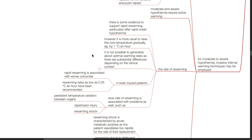With regards to the rate of re-warming, there is some evidence to support rapid re-warming, particularly after rapid onset hypothermia. However, it is more usual to raise the core temperature gradually, for example by 1 degree Celsius per hour. It is not possible to generalize about optimal warming rates as there are substantial differences depending on the clinical context. For example, in brain-injured patients, rapid re-warming is associated with worse outcomes. Re-warming rates as low as 0.25 degrees Celsius per hour have been recommended for brain-injured patients.